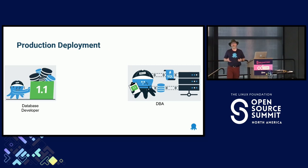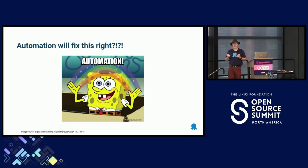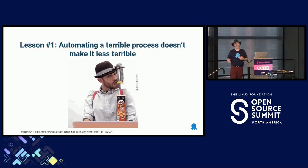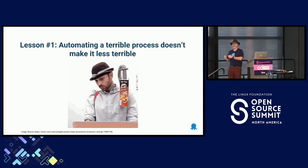By the time we got to production, it was like, is this going to work? Maybe, probably not — 60% of the time it didn't. So this is probably where I'm going to tell you that automation should fix all of those problems, right? It's going to solve every single one of your problems. But that's why I spent the last five-ish minutes talking about this terrible process — to highlight the very first lesson: if you automate a terrible process, you don't make it any less terrible.